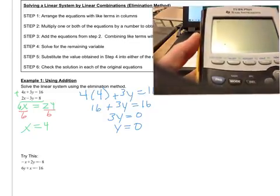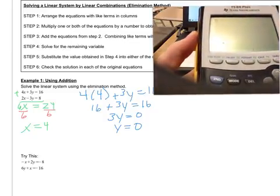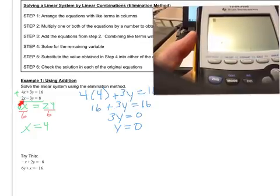On the calculator, what we want to do is take the values we just got, x equals 4 and y equals 0, and plug them into our original equations. We need to check both of them. So we'll start with the first equation.